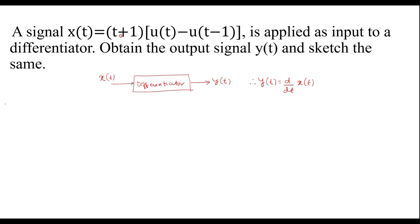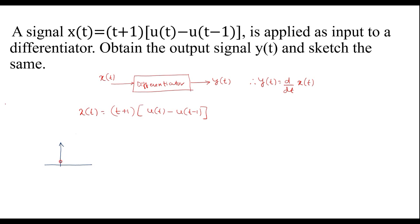First we will sketch x of t. We know that x of t is equal to (t plus 1)(u of t minus u of t minus 1). Here, t plus 1 is nothing but a ramp signal which begins at t equal to minus 1. This ramp signal has a slope of 1.